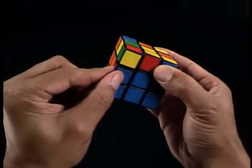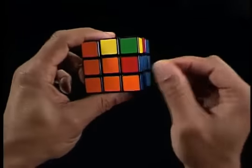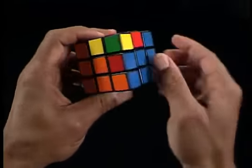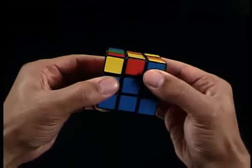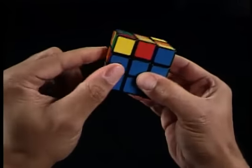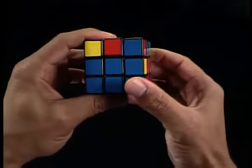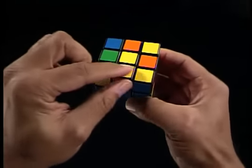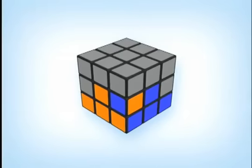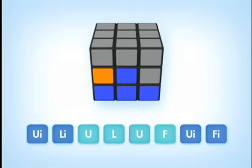Now, if you have an edge piece that's already in the middle layer but in the wrong position, then do either one of the sequence of moves from the solution guide based on where that edge piece is located. This will move that edge piece to the top U-face layer. For example, to move the edge piece out of the left side, we do the move sequence.